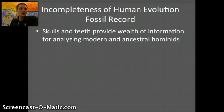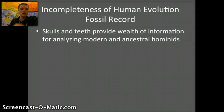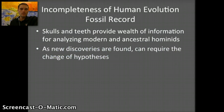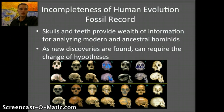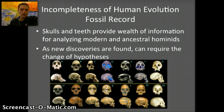Skulls and teeth provide a wealth of information for analyzing modern and ancestral hominids, giving us an idea of what those different species ate and consumed. As we find new discoveries, we can adapt our hypotheses. What's become really important most recently is DNA evidence — being able to sequence the DNA of different species. Neanderthals were relatively recently sequenced, so we can deduce how closely related different species are based on DNA evidence rather than just structural features.